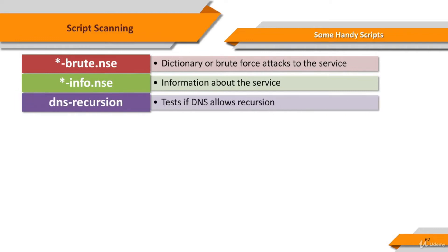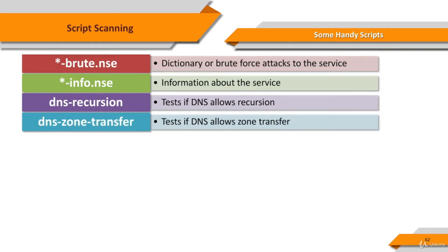DNS recursion checks if a DNS server allows queries for third-party names. DNS zone transfer requests a zone transfer (AXFR) from a DNS server. If the query is successful, all domains and domain types are returned along with common type-specific data.